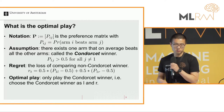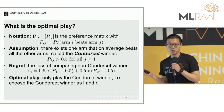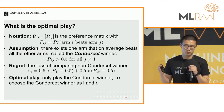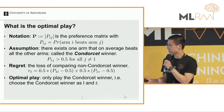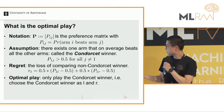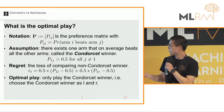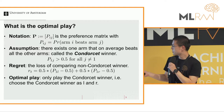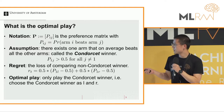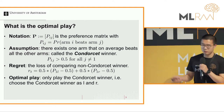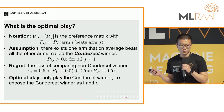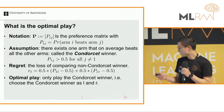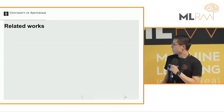For the optimal play, you want to choose two arms without regret. To achieve zero regret, you want to choose the left arm equal to the Condorcet winner and also choose the right arm equal to the Condorcet winner. In this case, your regret goes to 0. So optimal play means choosing the Condorcet winner as both the left arm and the right arm.